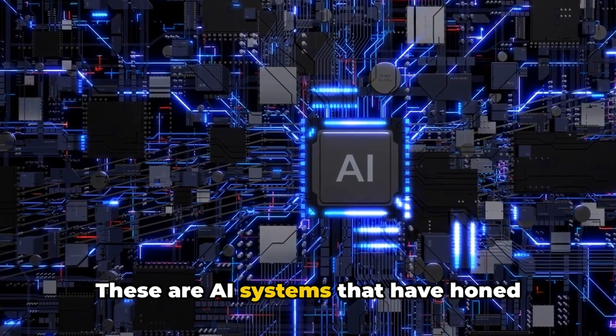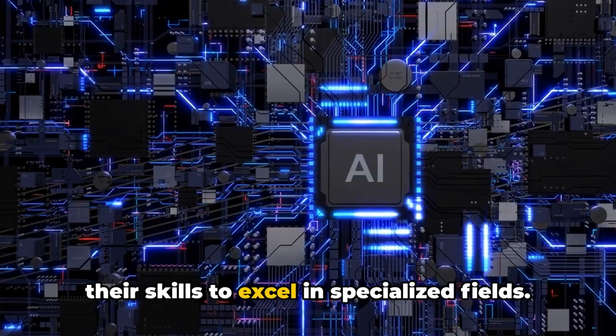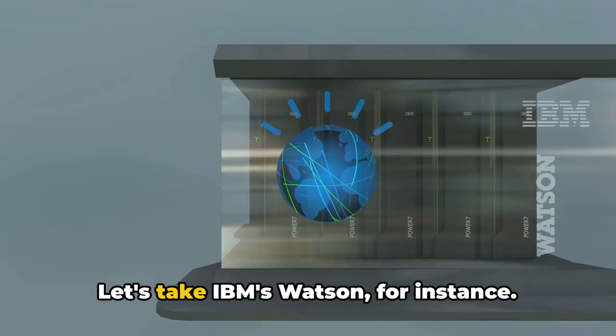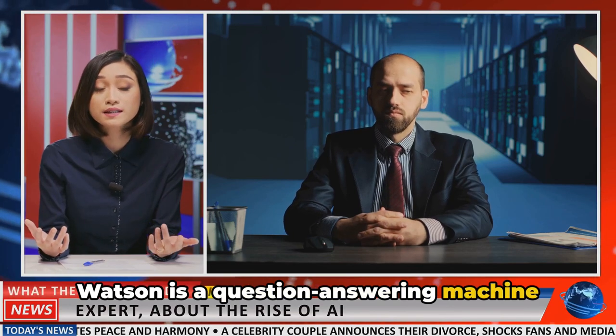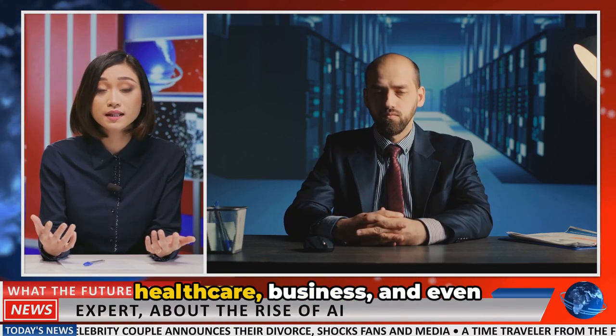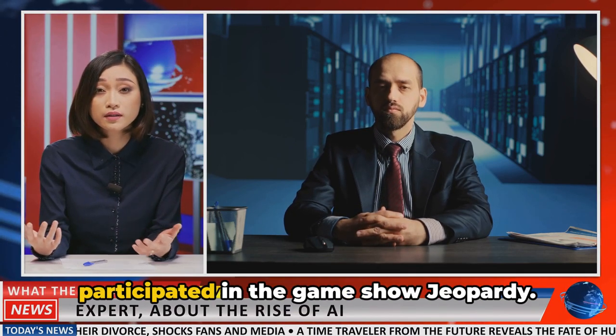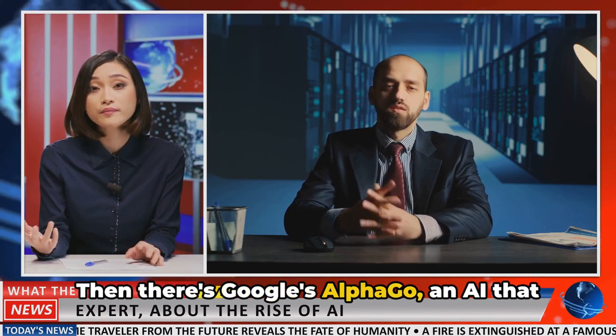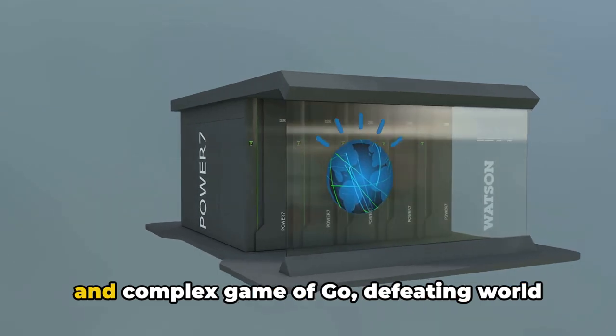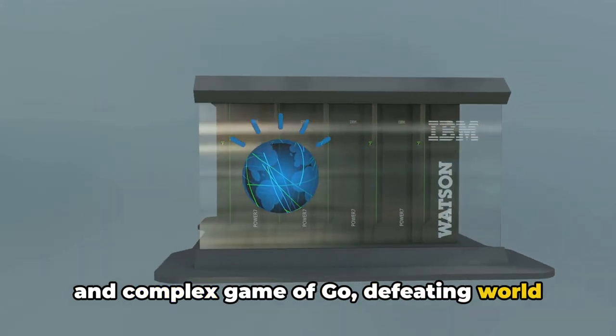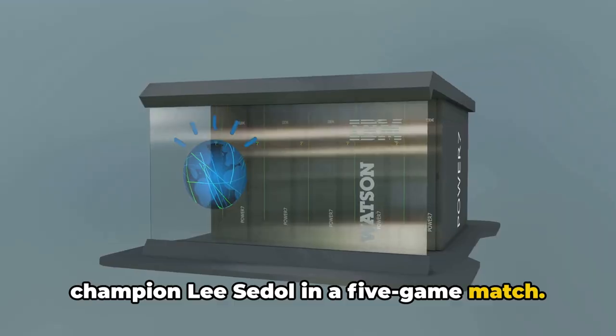These are AI systems that have honed their skills to excel in specialized fields. Let's take IBM's Watson, for instance. Watson is a question-answering machine that has made waves in the fields of healthcare, business, and even participated in the game show Jeopardy. Then there's Google's AlphaGo, an AI that stunned the world by mastering the ancient and complex game of Go, defeating world champion Lee Sedol in a five-game match.